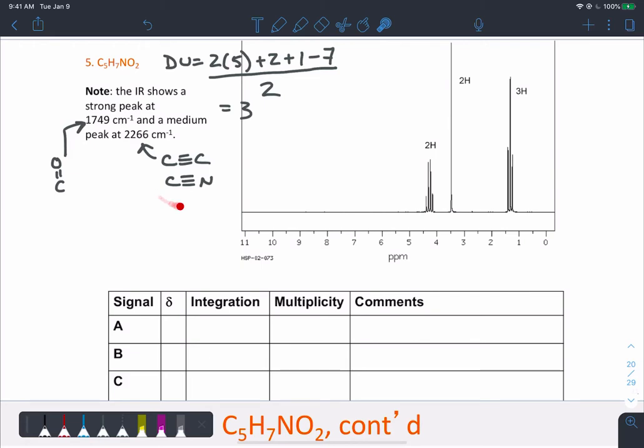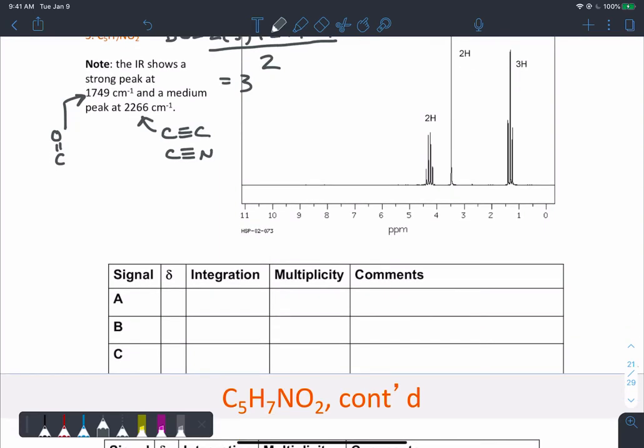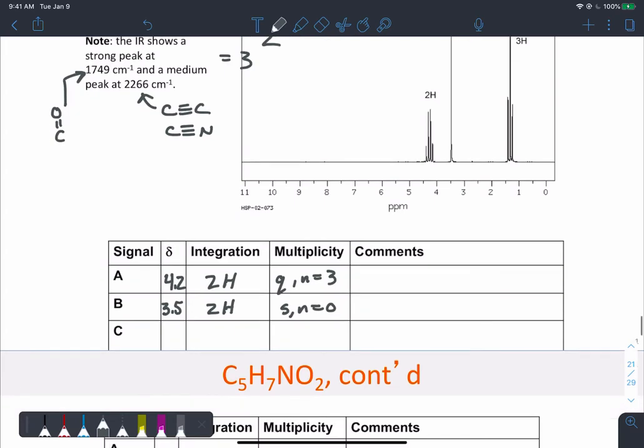So before we decide on what that functional group is, let's take a look at what's happening in the rest of the molecule. So at about 4.2 we have a 2H integration, we're told that that value, quartet, so it's next to three protons. We've got something at 3.5, integrating for two. It's a singlet, so no proton neighbors. And then we've got something at 1.2, integrating for three. It's a triplet and N equals two.